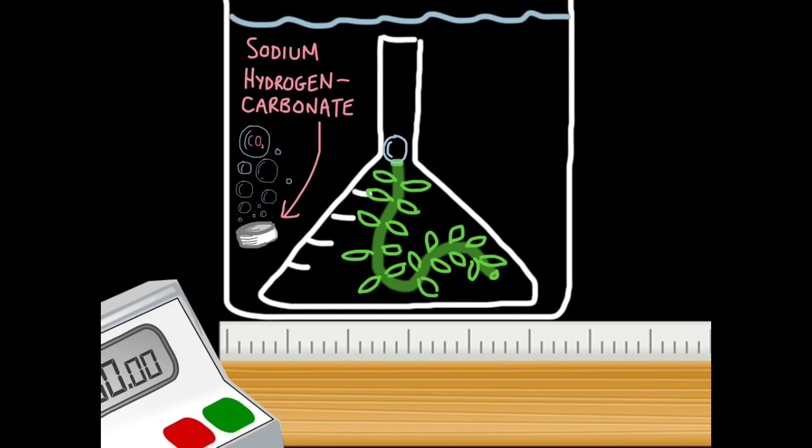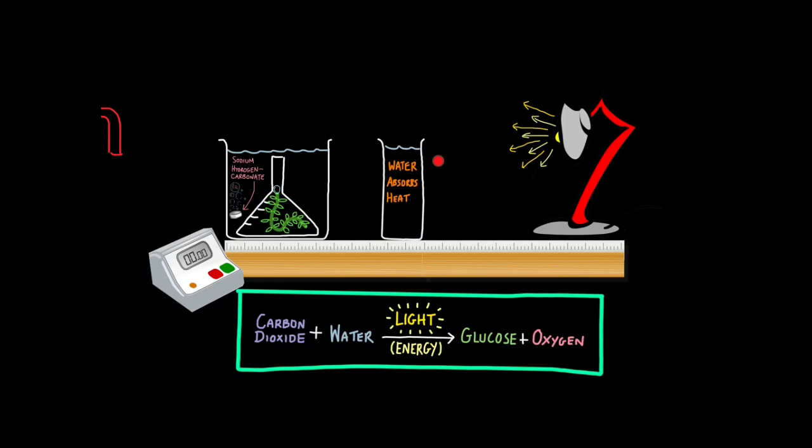Here, I'm using sodium hydrogen carbonate. It's a soluble tablet that will basically dissolve and produce carbon dioxide. I will also need another beaker of water or you could use a water bath to control temperature. But what this does is it absorbs the heat from the lamp but still allows light through. This ensures that temperature is constant and doesn't affect the rate of photosynthesis.